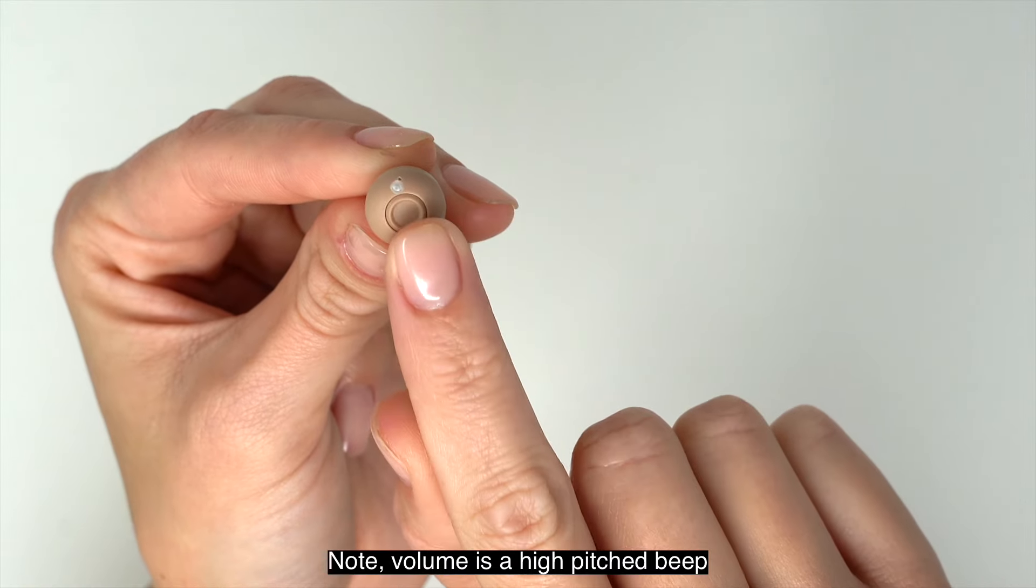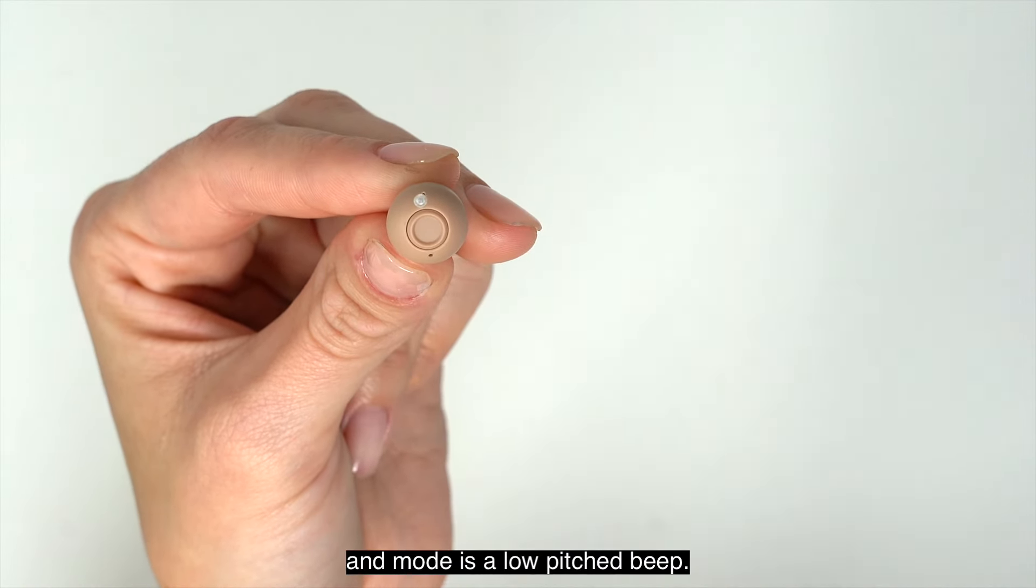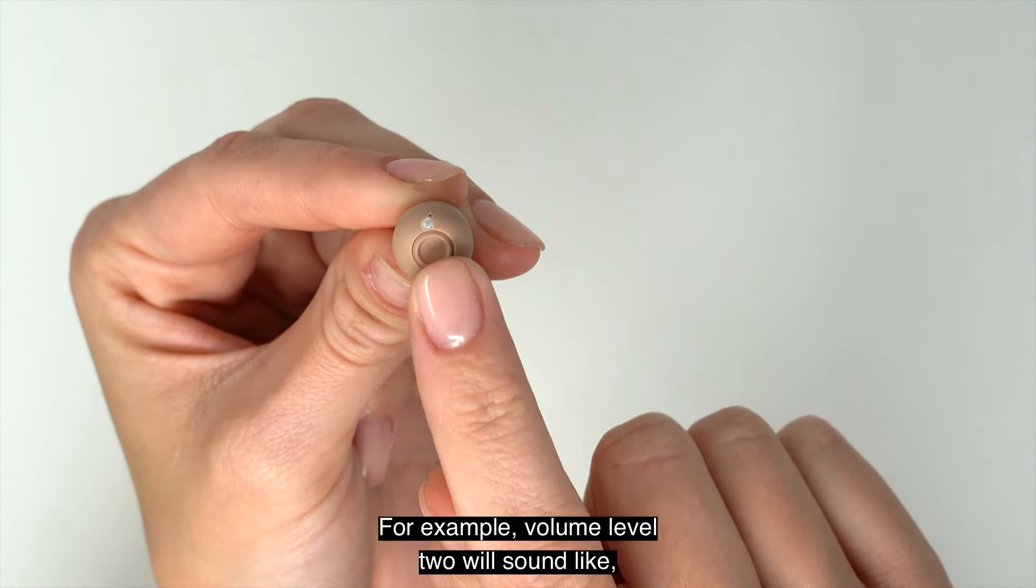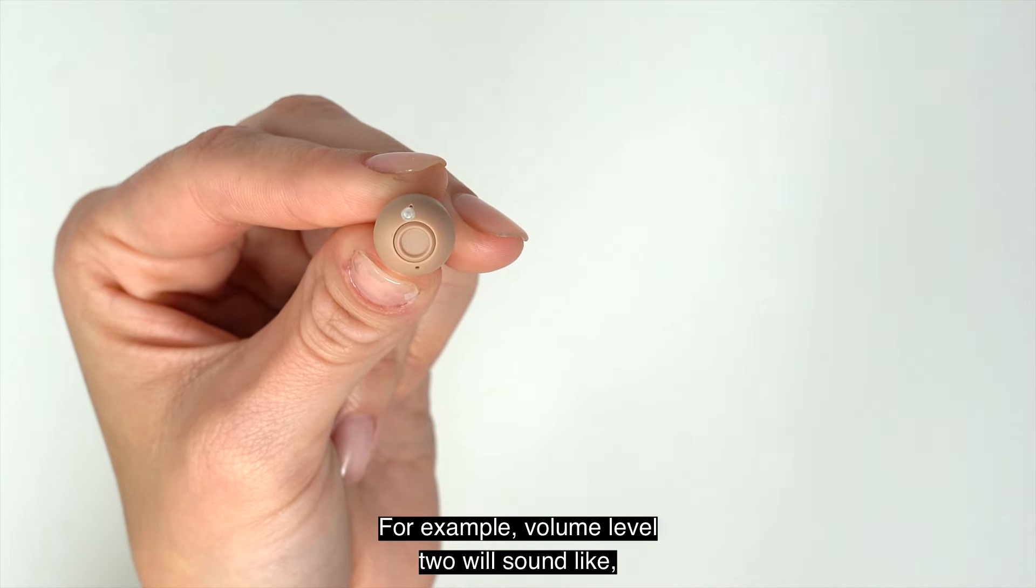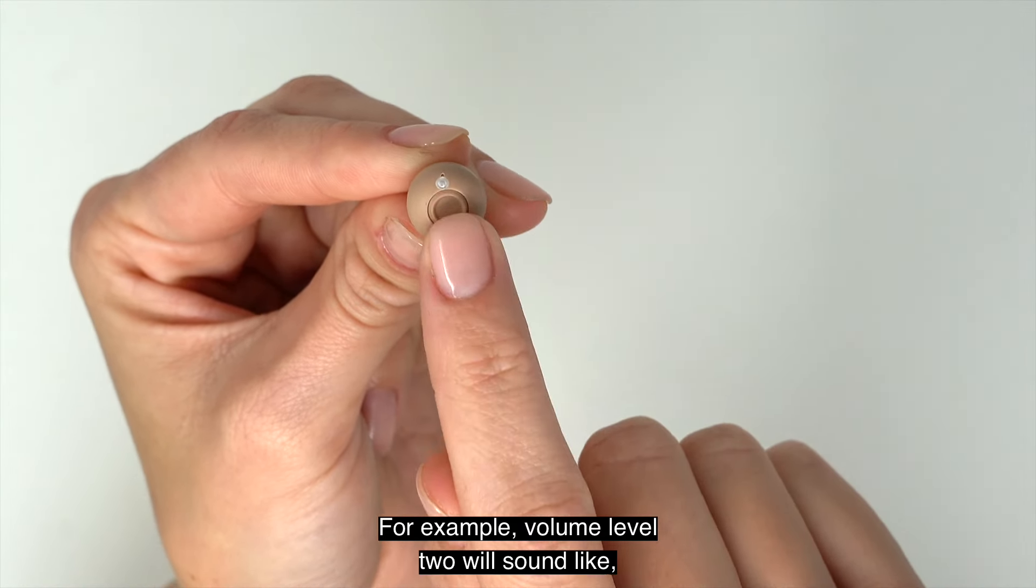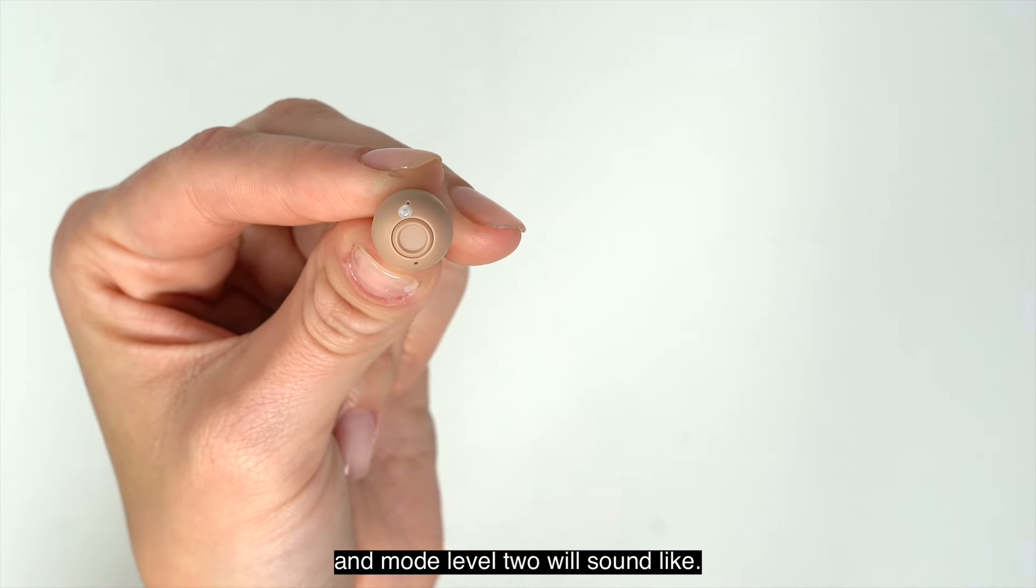Volume is a high-pitched beep and mode is a low-pitched beep. For example, volume level 2 will sound like and mode level 2 will sound like.